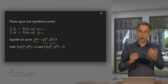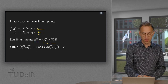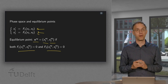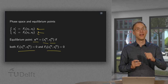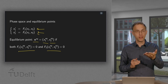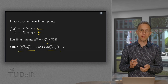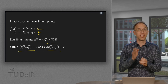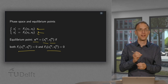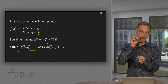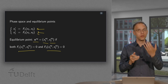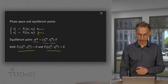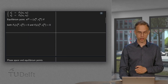So if f1 and f2 are zero — because if f1 and f2 are both zero, then x1_equilibrium' equals zero and x2' equals zero. So the rate of change is zero and you stay there. So if you are in an equilibrium point, you stay there. That's why they are called equilibrium points.